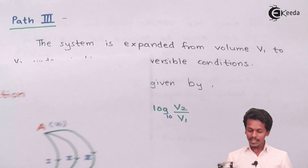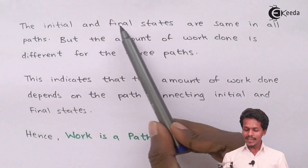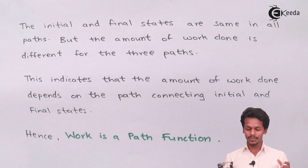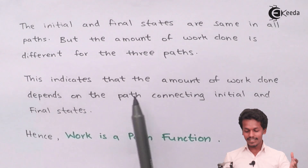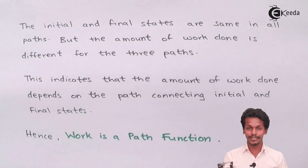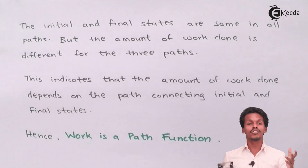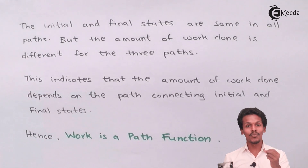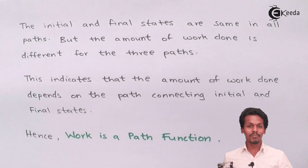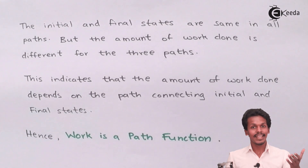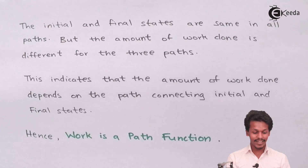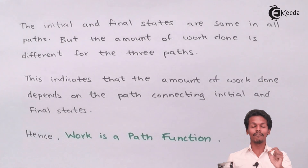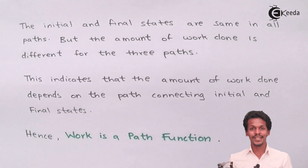Observing these three cases, the initial and final states are the same in all paths, but the amount of work is different for each path. This indicates that the amount of work depends on the path connecting the initial and final states. The change in volume from V1 to V2 occurs in all cases, but the work value differs — therefore, work is a path function, not a state function.